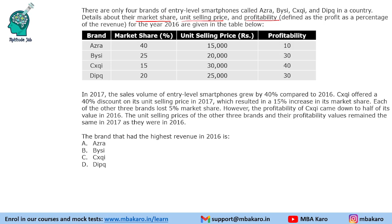They have defined profitability as profit as a percentage of the revenue, not of the cost price. Generally in quant we take profit as a percentage of cost price, but here they have used the word profitability which means as a percentage of the revenue. So we are given the market share, selling price and profitability.